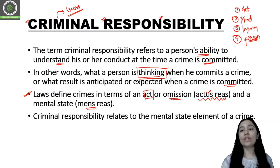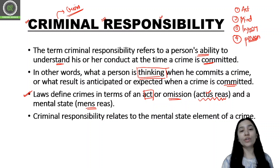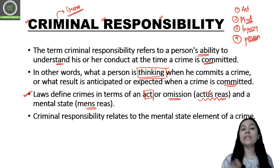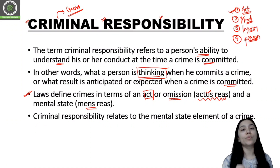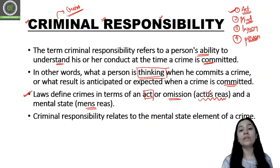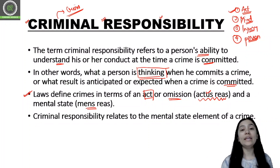So these are the four elements of crime and criminal responsibility. Actus reus and mens rea are really, really very important. Because if I act but I am not mentally stable — I am not mentally sound and I am not able to understand the severity of my act and its consequences — then I am not considered a criminal.